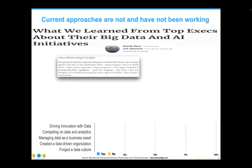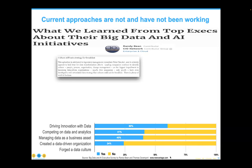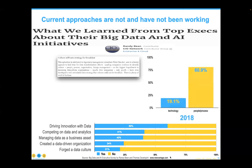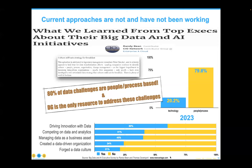From a wonderful set of surveys by Randy Bean and Tom Davenport: are you driving innovation with data? This is the first year in eight years of survey that we've gotten greater than half. Are you competing on data and analytics? Four in ten are. Are you managing data as a corporate asset? Again, four in ten. Are you creating a data-driven culture? One in four. Are you forging a data-driven organization? One in five. But the most important part of this survey is the question over the years: are your problems largely technology-based or people and process-based? In 2018 it was 80-20, and all the way through to 2023, 80% of data challenges are people and process-based.